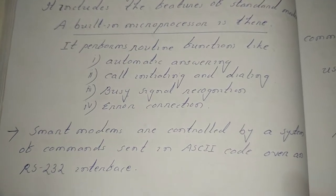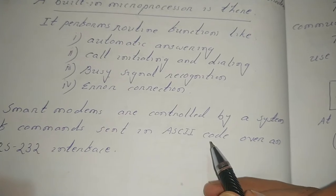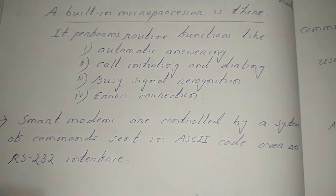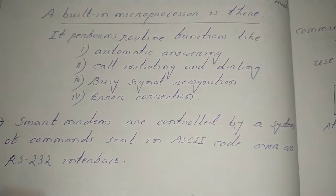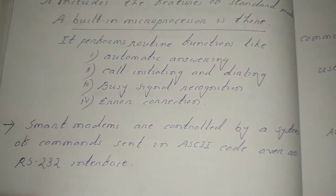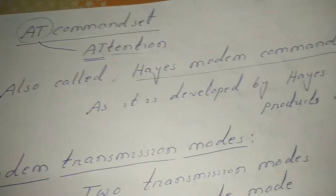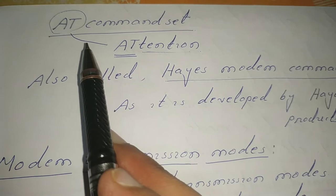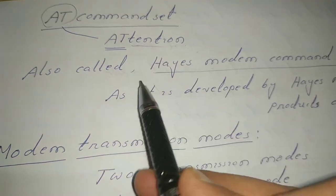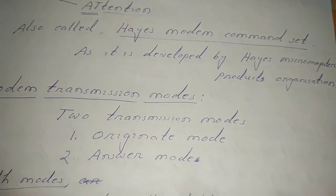The smart modem functions are controlled by a set of commands sent over ASCII — the American Standard Code for Information Interchange — via an RS-232 serial interface. That set of commands is called the AT command set. AT stands for 'attention,' so it is also called the attention command set. It is sometimes called the Hayes modem command set because it was developed by the Hayes Microcomputer Products organization.